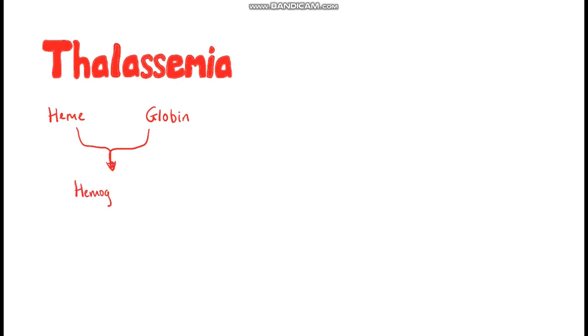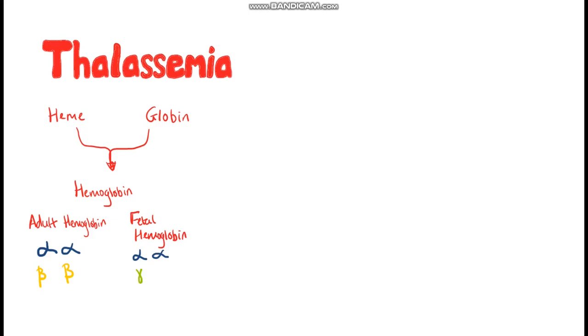Finally, thalassemia — a form of hemoglobinopathy, meaning a disease in hemoglobin production. Unlike the previous conditions which involved heme production, here the globin production is defective. Globin wraps around the heme molecule and protects it. Adult hemoglobin is made up of two alpha and two beta globins, while fetal hemoglobin has two alpha and two gamma globins. In alpha thalassemia, the problems lie in the alpha globins; in beta thalassemia, in the beta globins. There are four alpha genes and two beta genes.